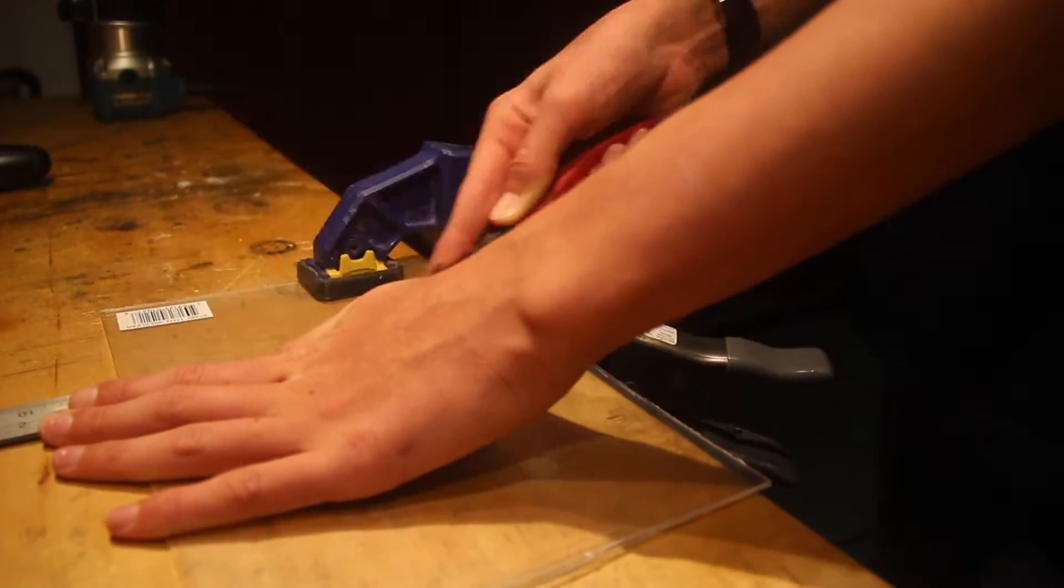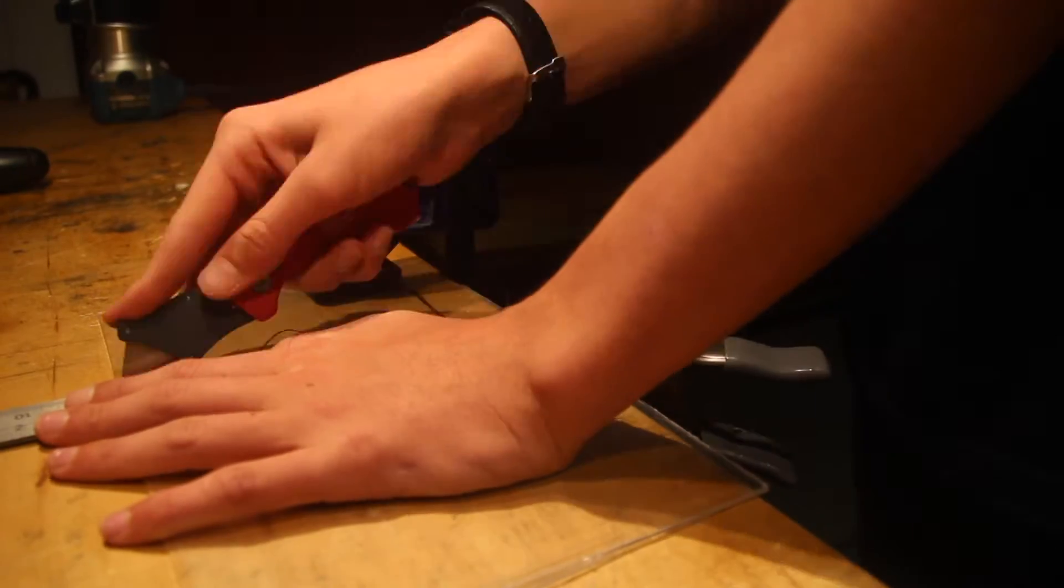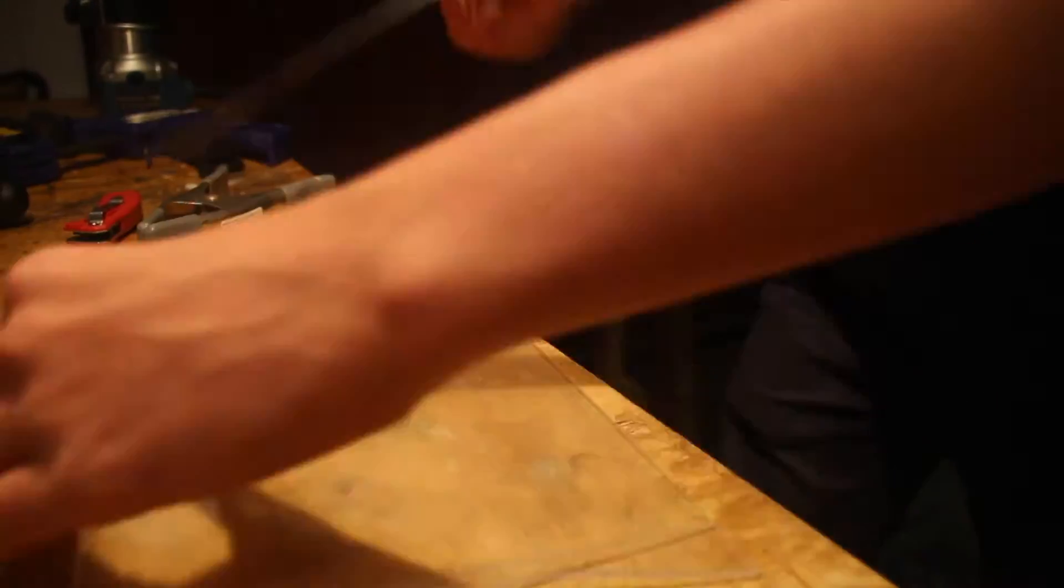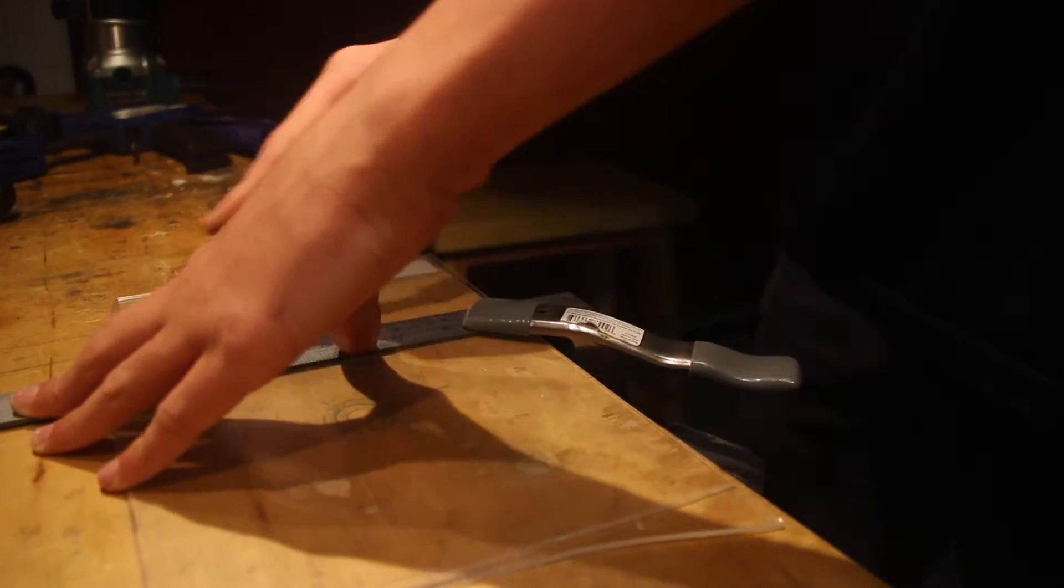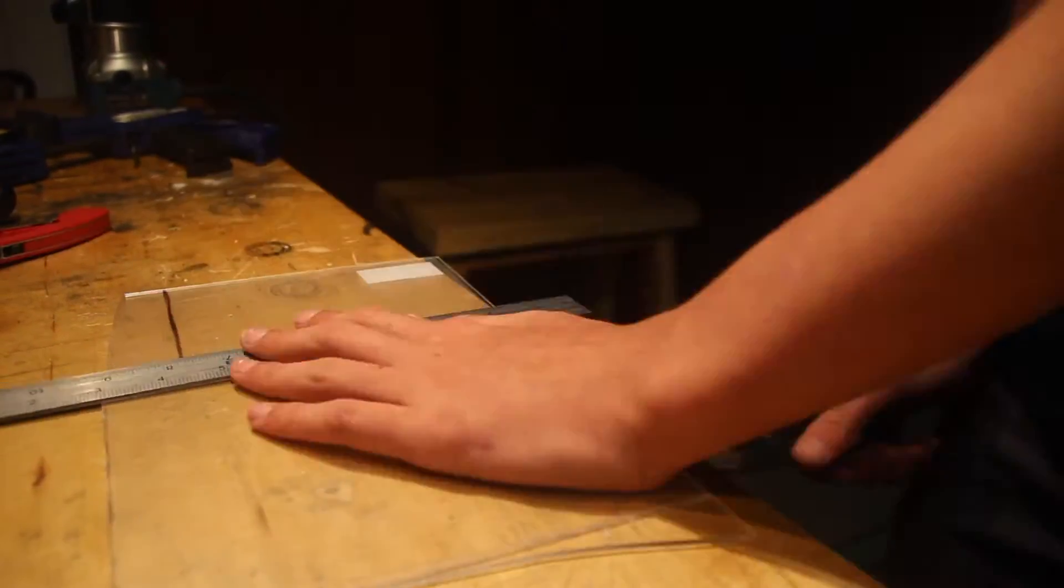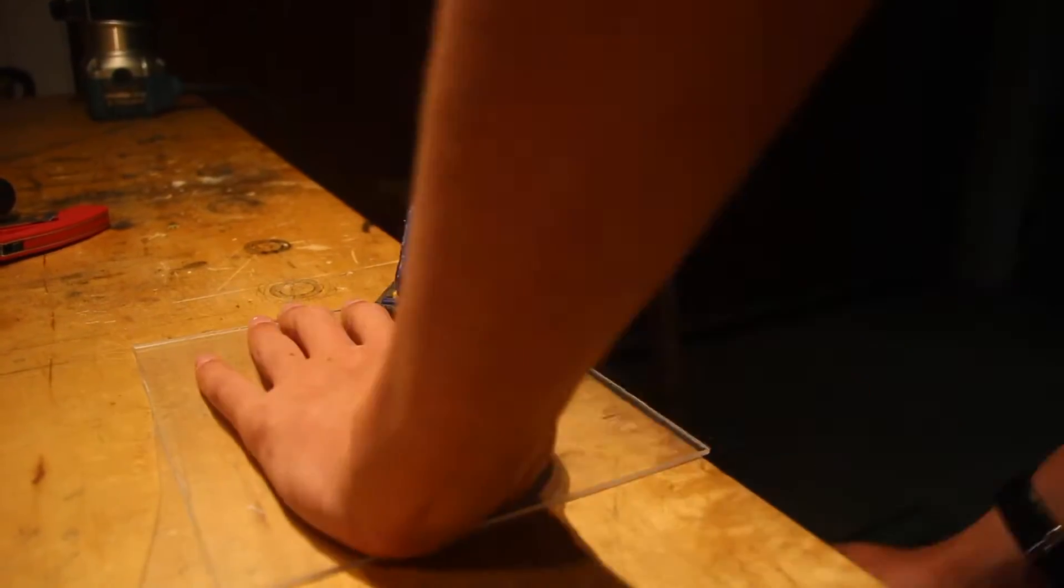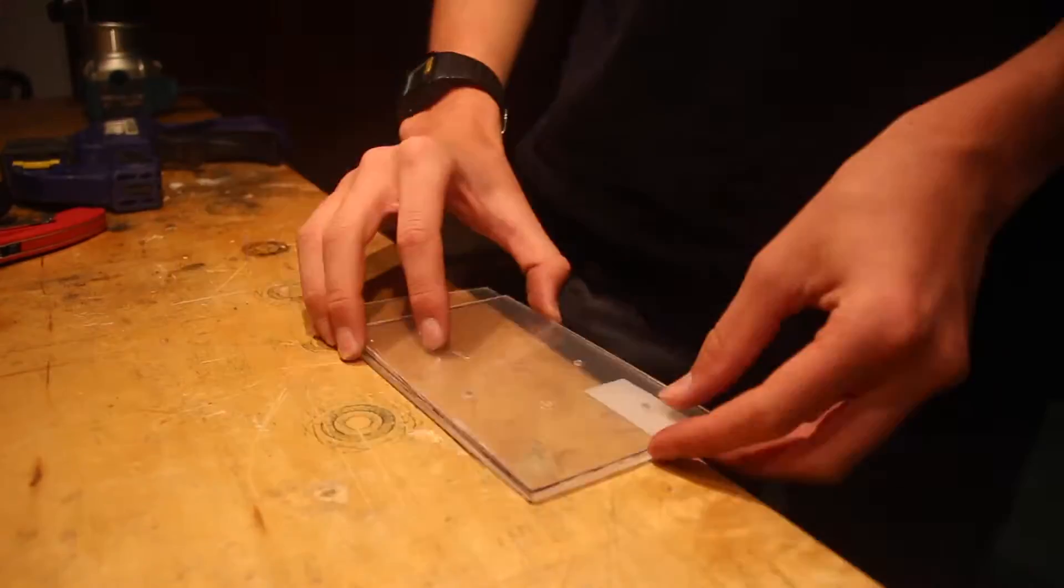And the thickness was a little bit too thin, so I cut out another piece. And this time I had a little bit more success with the cutting. You just have to score it a lot of times with a razor blade. I believe there's a special tool to do it, but I didn't have it, so I just did the best with what I had.